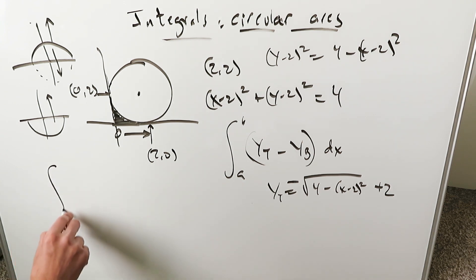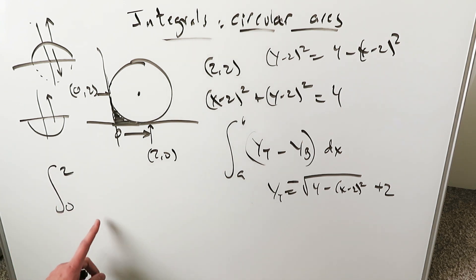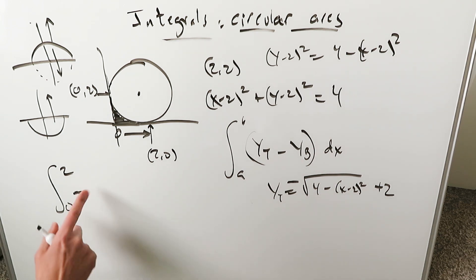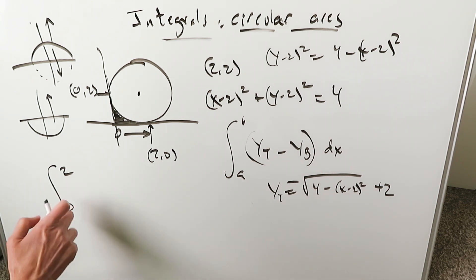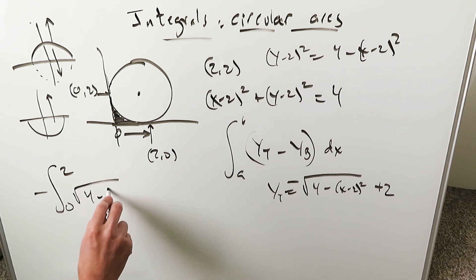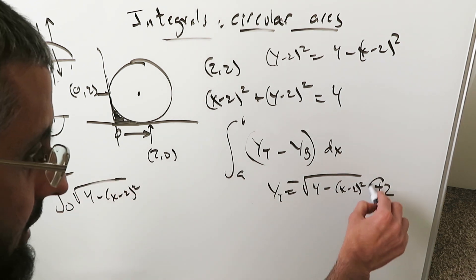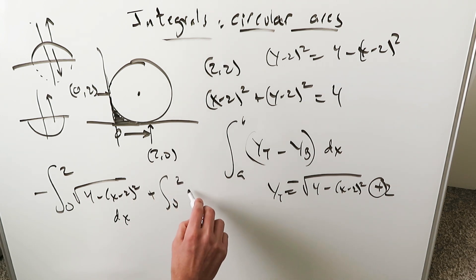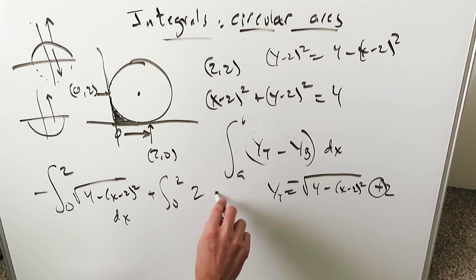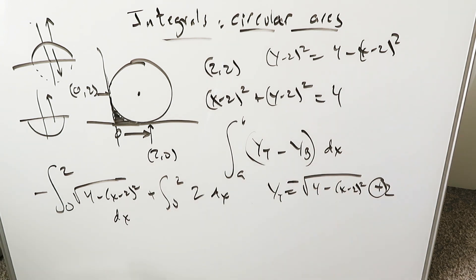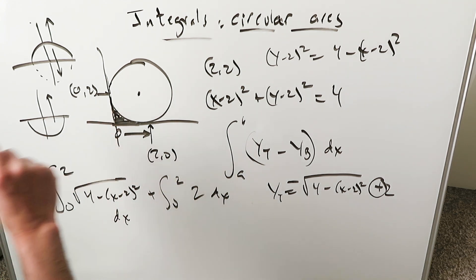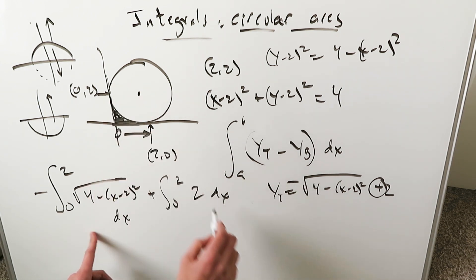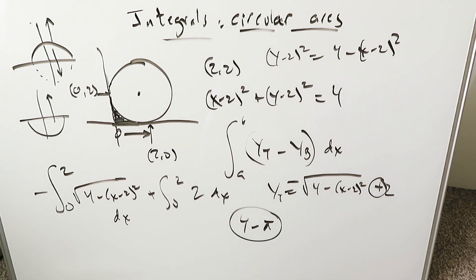What you would do for your integral setup is: from 0 to 2, you take the formula with the minus sign out front — so minus square root of 4 minus x minus 2 whole square — and then the plus 2 can be set up as a separate integral from 0 to 2, with respect to dx. The minus makes all the difference; otherwise your answer will come out wrong. If you compute this correctly, this area should turn out to be 4 minus pi.